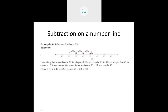We also saw different examples. For 'subtract 23 from 55', we counted forward in steps of 10 from 23: 23, 33, 43, 53. Since 55 is closer to 53, we can't take a step of 10, so we take a step of 2. 53 plus 2 is 55. We jumped 10, 20, 30, 32. So 55 minus 23 is 32 — that is 3 tens and 2 ones.